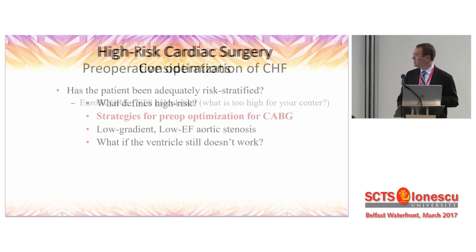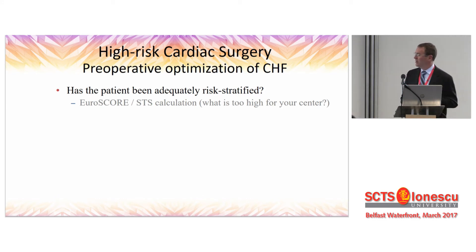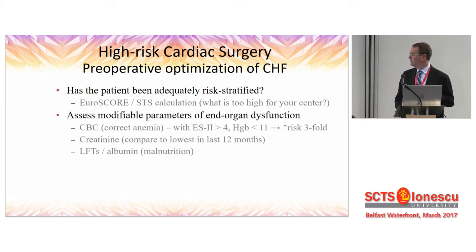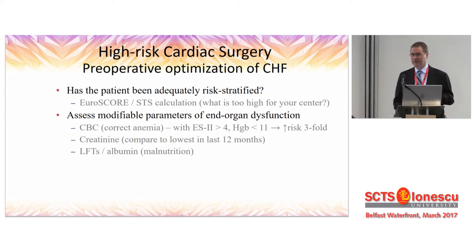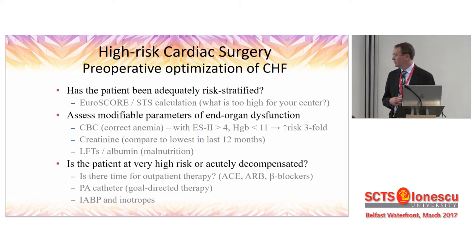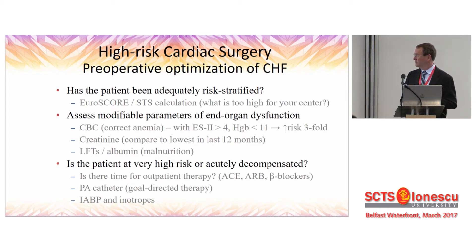So what are strategies for preoperative optimization? We have to ask a couple of questions. Has the patient been adequately risk stratified? Euro score, STS calculations — what is too high a risk for your center? If your center doesn't have MCS backup, is this the kind of case you should undertake? Second, assess the modifiable parameters of end-organ dysfunction. Make sure anemia is corrected, because a decreased hemoglobin can be associated with a three-time risk of operative mortality. Look at creatinine, compare it to the last 12 months, optimize output, and look at LFTs and albumin for malnutrition. Third, is the patient very high risk or acutely decompensated? Is there time for outpatient therapy, or do we need to bring the patient in for a PA catheter with goal-directed therapy and maybe a balloon pump or inotropes?